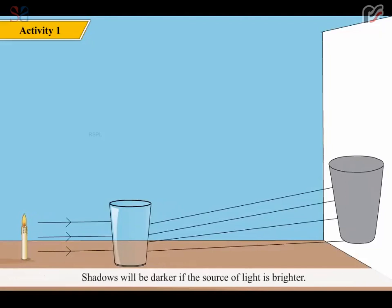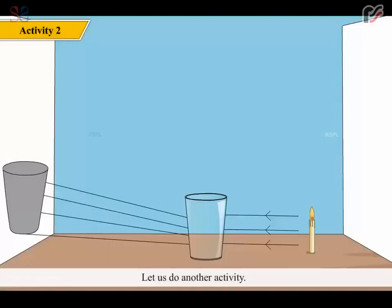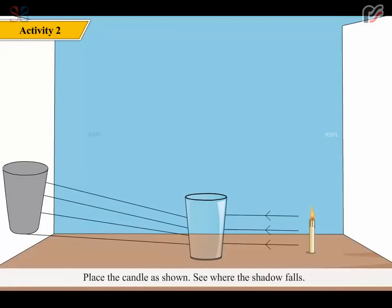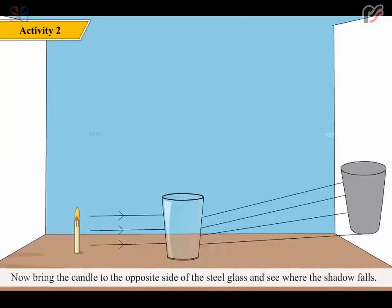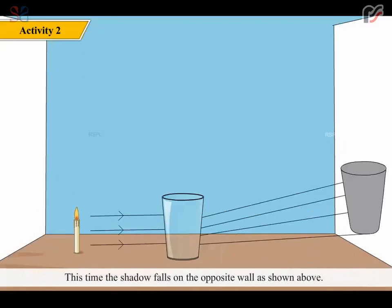Shadows will be darker if the source of light is brighter. Another activity tells us that shadows are formed opposite to the source of light. Place the candle as shown and see where the shadow falls. Now bring the candle to the opposite side of the steel glass and see where the shadow falls. This time, the shadow falls on the opposite wall.